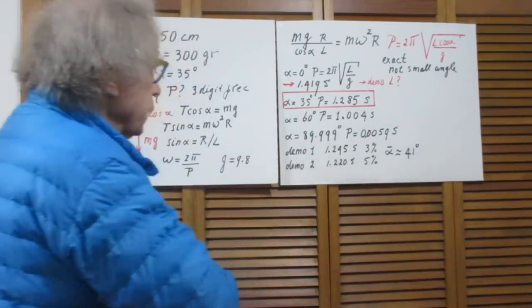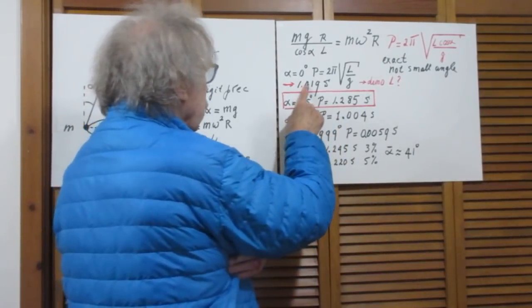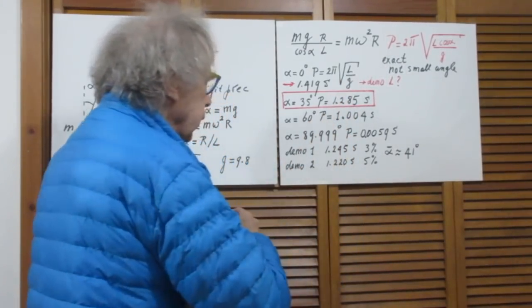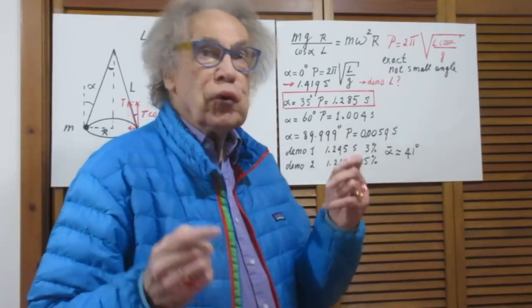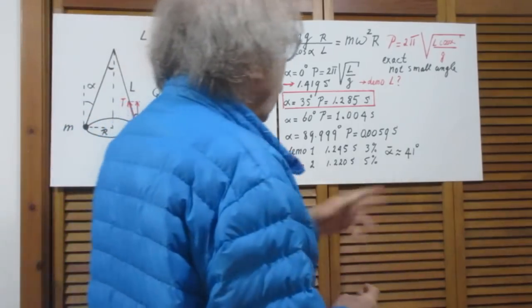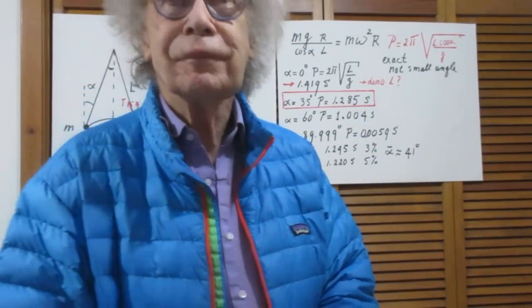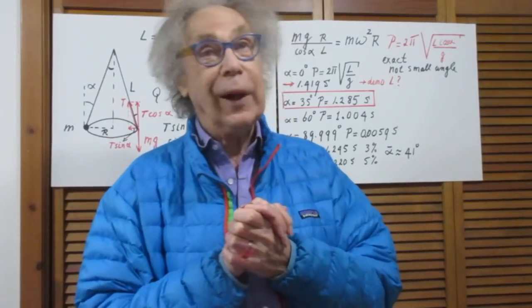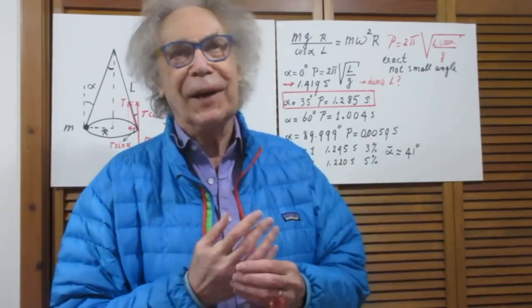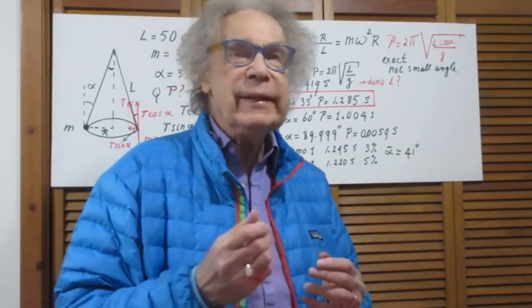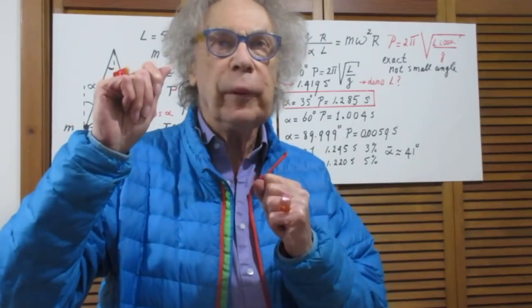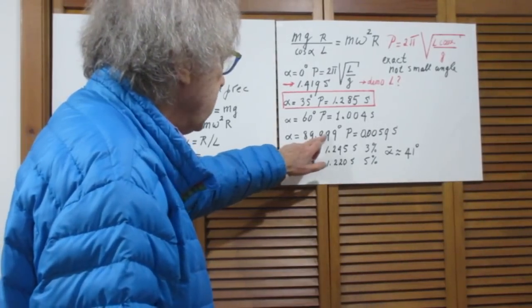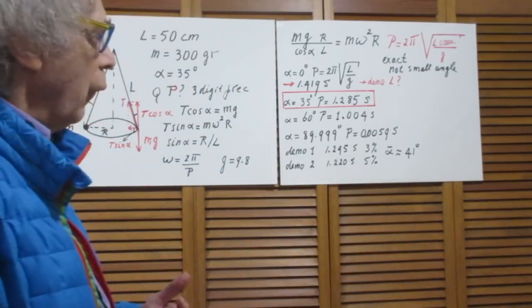When the angle increases, the period goes down. Notice: at 0 degrees it is largest, larger than at 35 degrees, and 35 degrees gives a larger period than at 60 degrees. When you go to 90 degrees, the cosine of that angle is 0, so the period will be 0 seconds — which would violate Einstein's theory of special relativity. But to show that indeed the closer alpha is to 90 degrees the smaller the period will be, I chose alpha = 89.999 degrees, and you find a period of 6 milliseconds.